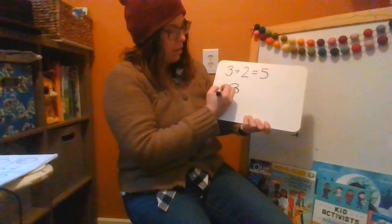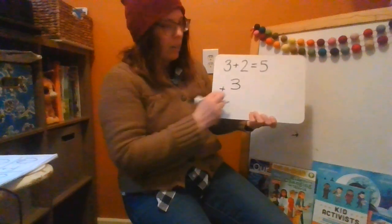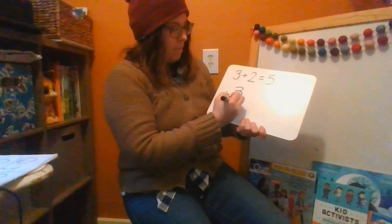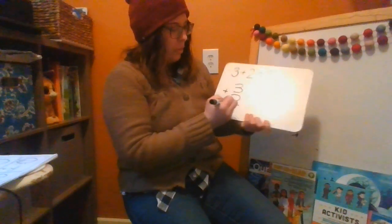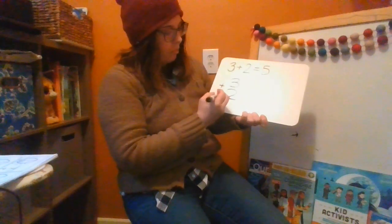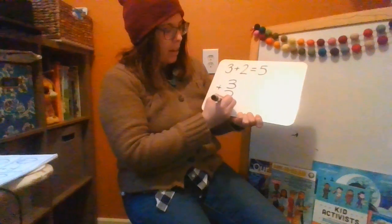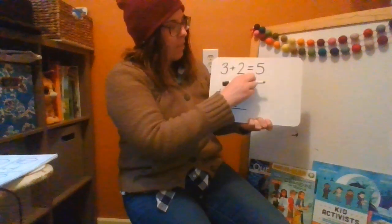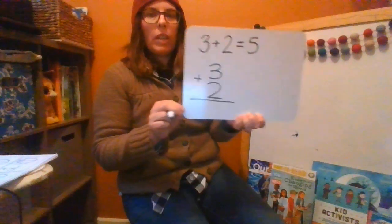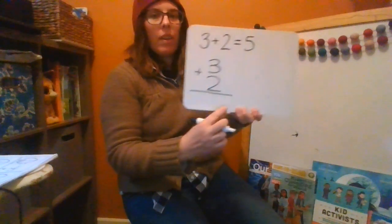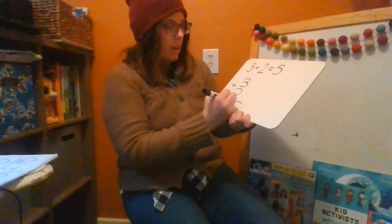3, and then the plus sign goes over here to the side. 3 plus 2. And then this is the equal sign. Instead of being the two little lines like that, it's one big line like this underneath. And then we write the answer down here.